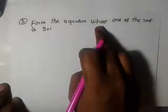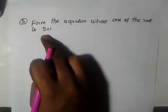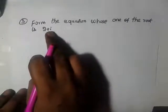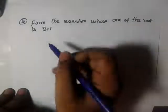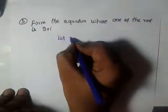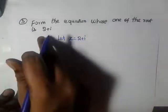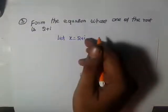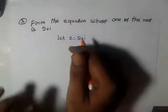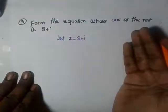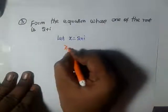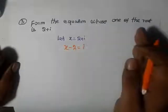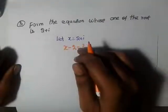Now, form the equation whose one root is 2 plus i. Let x equal to 2 plus i. Since i is the imaginary part, we move the rational number to one side: x minus 2 equals i — imaginary on the right-hand side, rational remaining on the left side. Now squaring both sides.